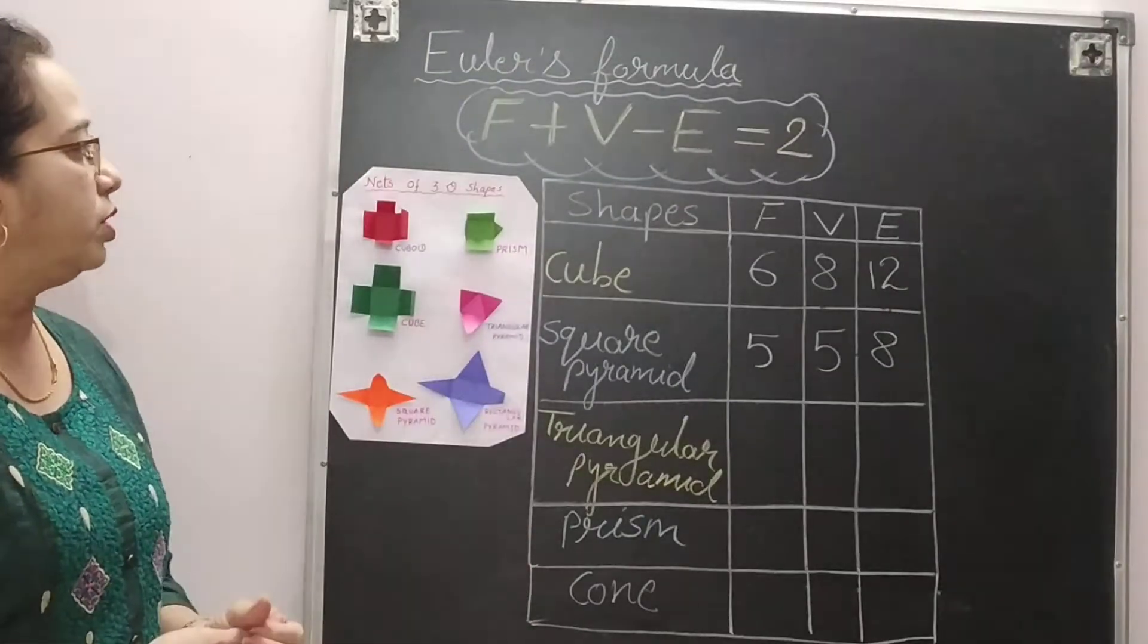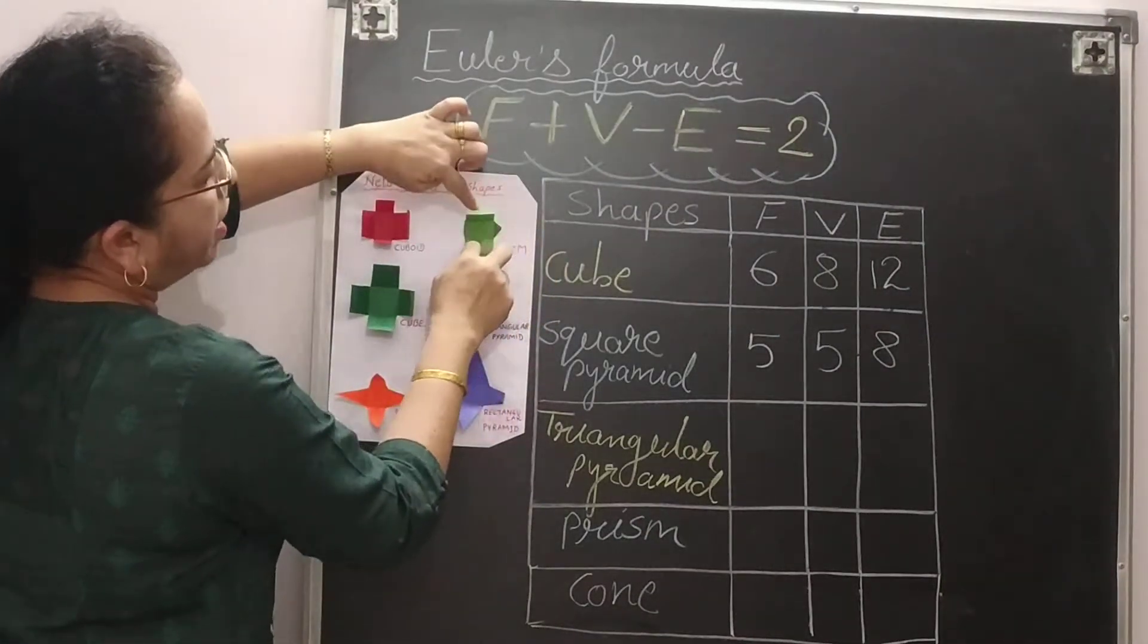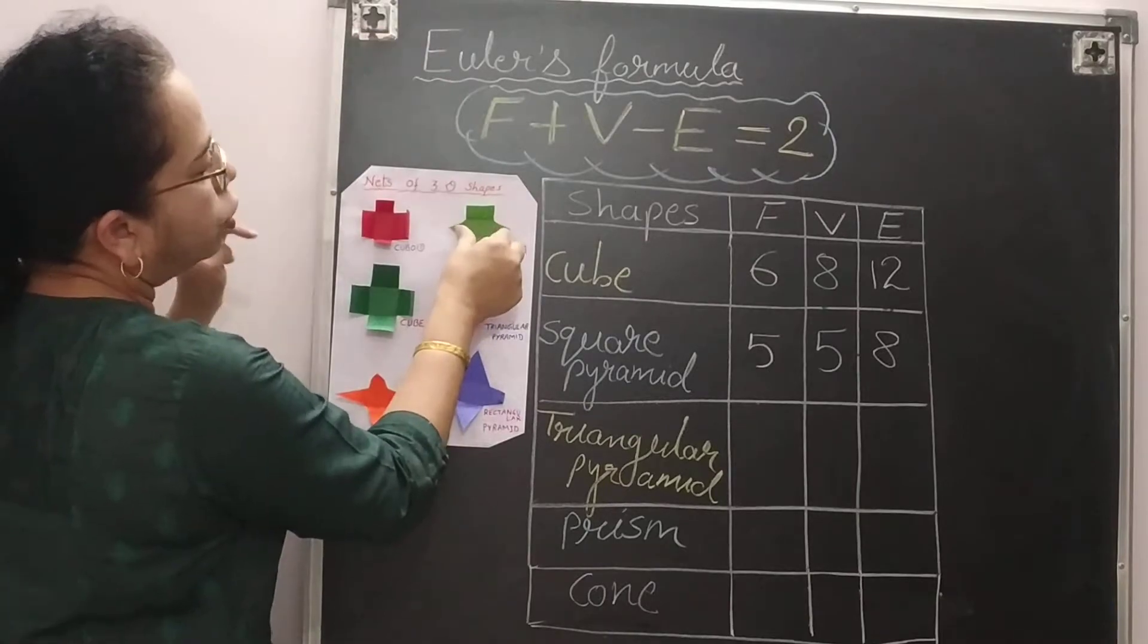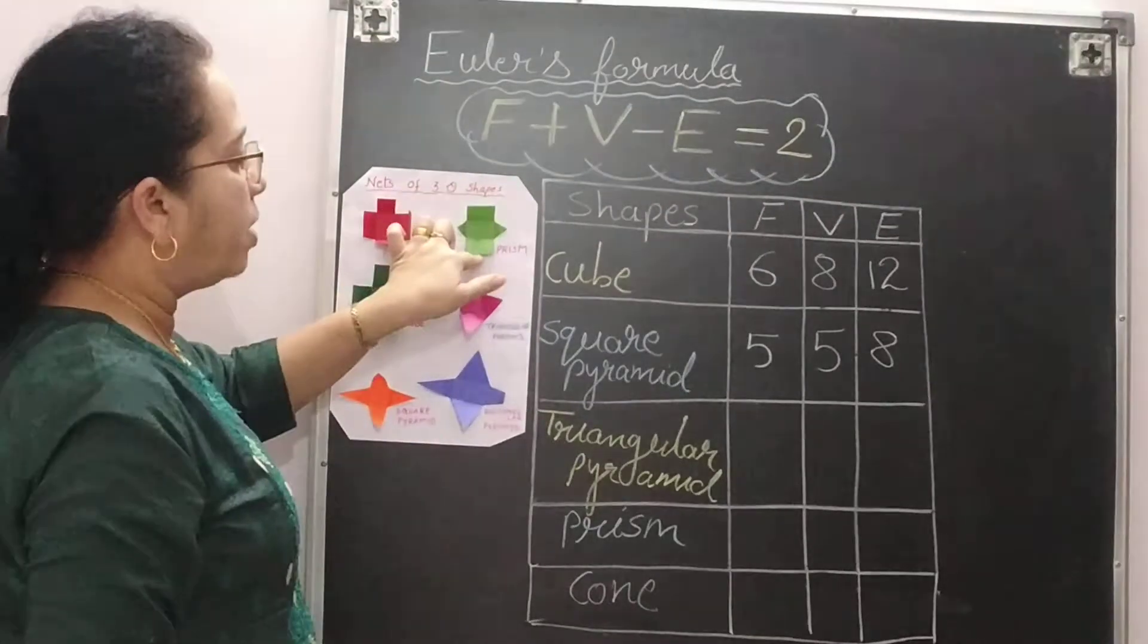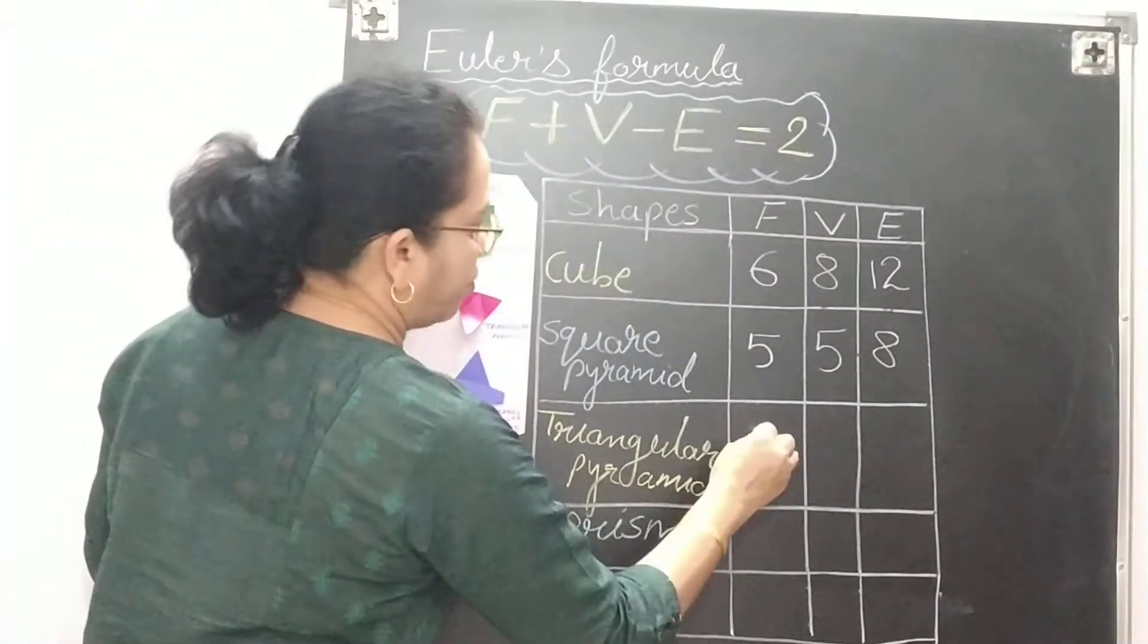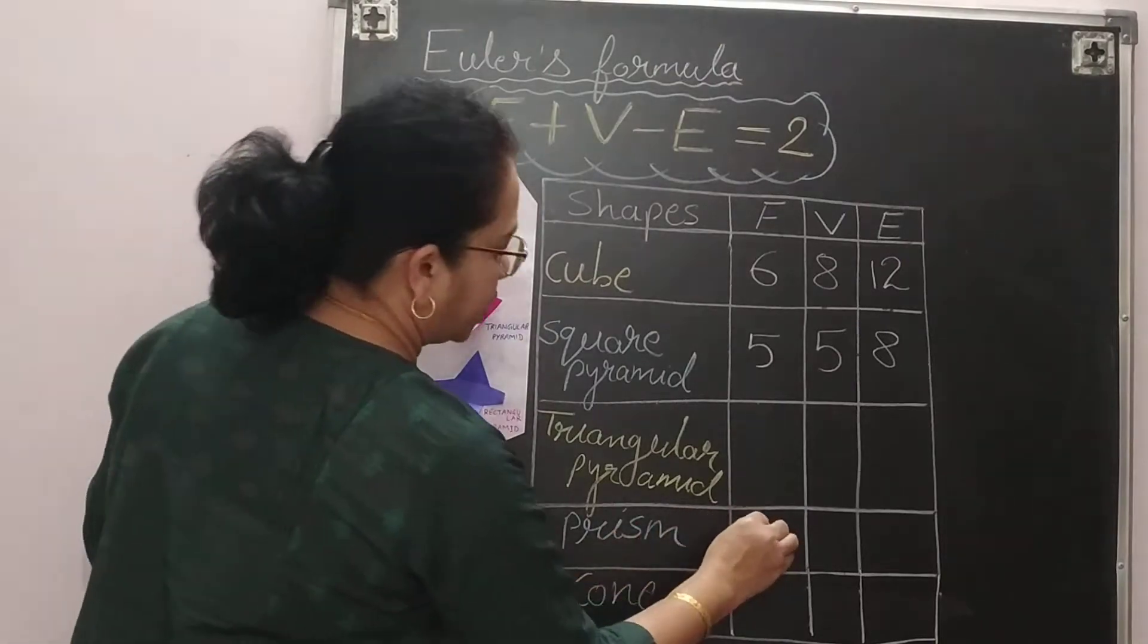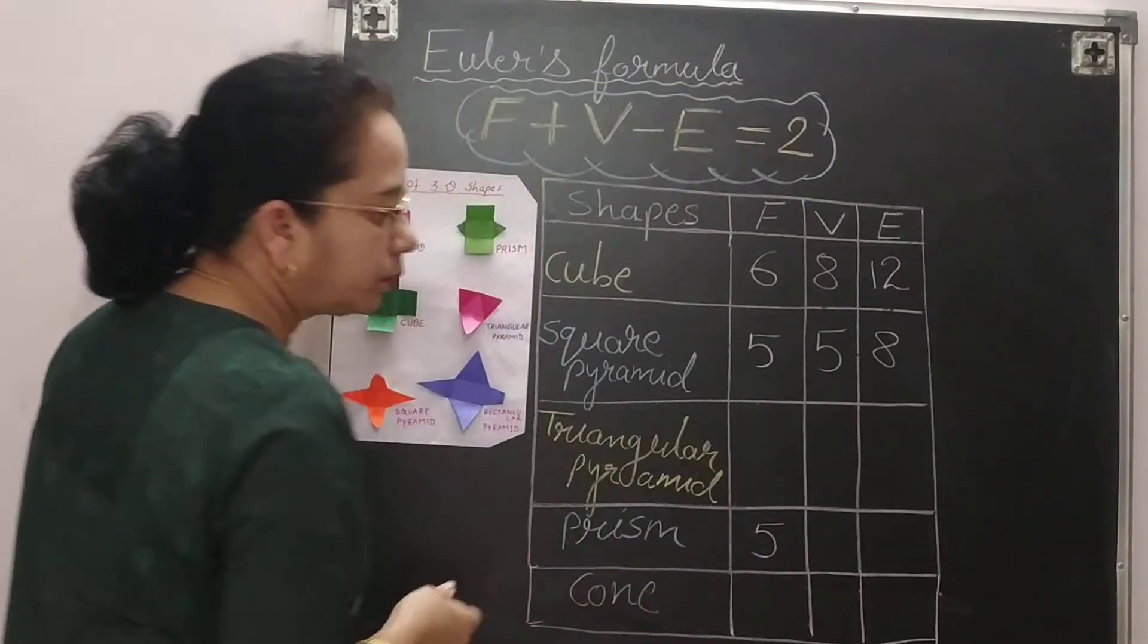Now come for the triangular pyramid. This is your triangular pyramid. Here 3 triangular faces and 3 rectangular faces and 2 triangular faces are there. So total number of faces will be 5. Sorry this is prism. So this is 5.